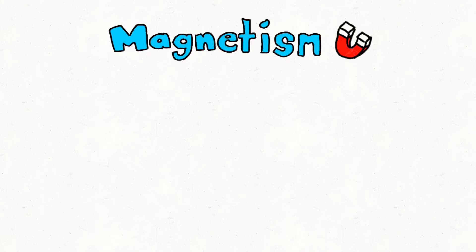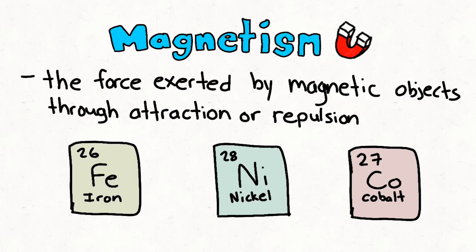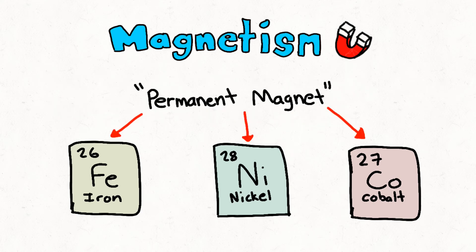So, what is magnetism? Magnetism is the force exerted by magnetic objects through attraction or repulsion. Magnetic materials like iron, nickel, and cobalt are known to be magnetic. These materials exert their own constant magnetic force and are therefore known as permanent magnets, like the classic horseshoe magnet.